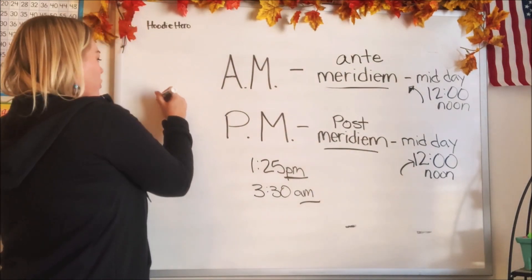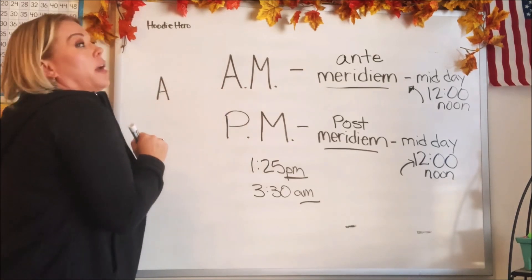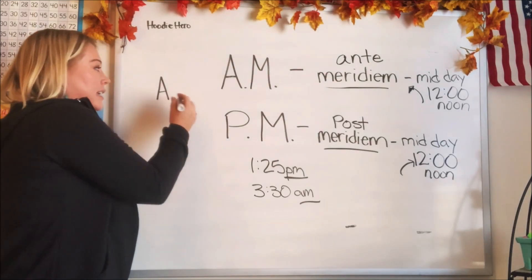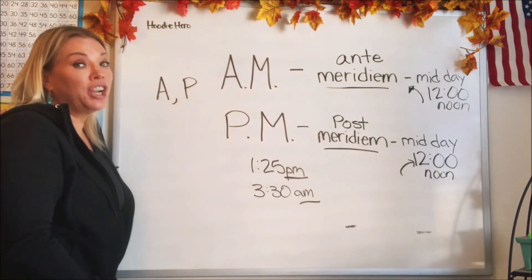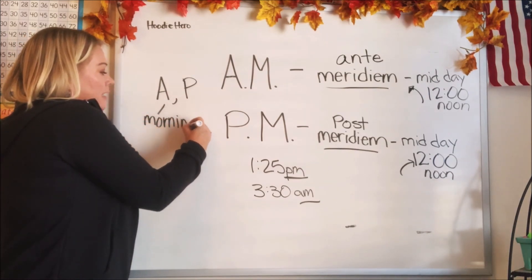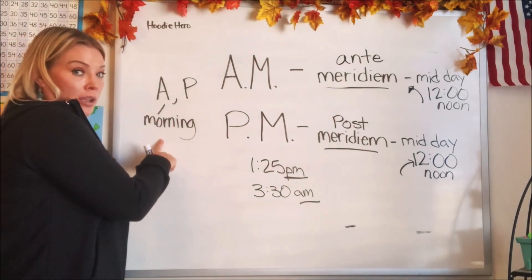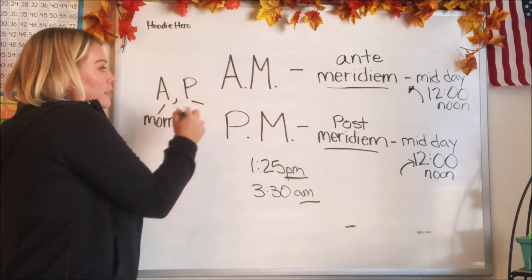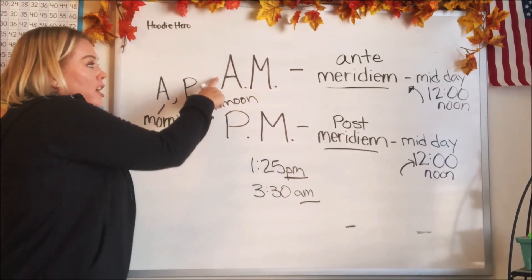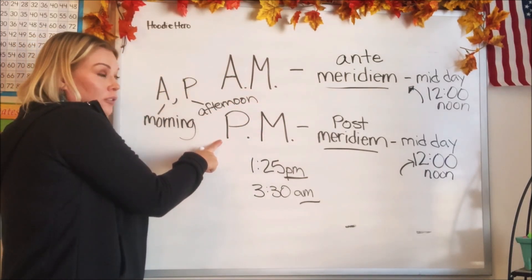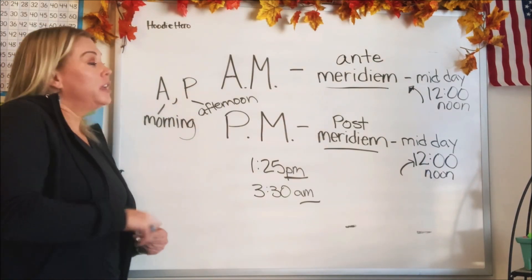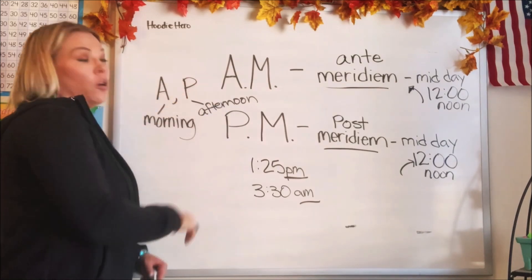Sometimes it may be hard to remember which one means what — a.m. or p.m. — but I have a trick. When we do the alphabet, which one comes first, a.m. or p.m.? The a.m. does, because A is the very first letter in the alphabet. So a.m. comes before p.m., which means a.m. is the morning — the very first part of the day. And p.m. comes second, which is the afternoon or evening. Just remember: A comes before P in the alphabet, so a.m. is morning and p.m. is afternoon and evening.